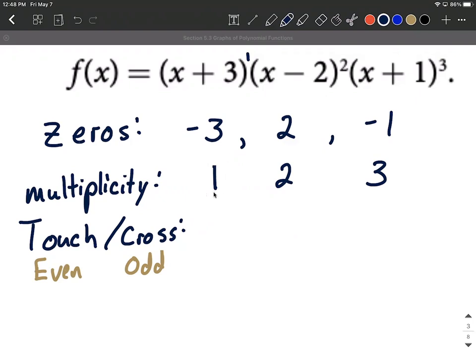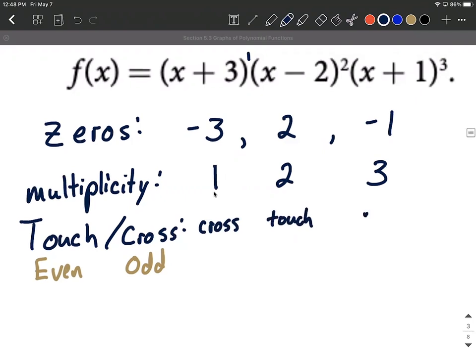All right, so one, say that's an odd, that's going to cross. Two, even, that's going to touch. And three, another odd, that's going to cross.